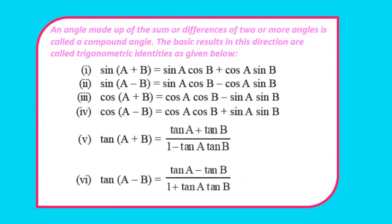An angle made up of the sum or difference of two or more angles is called a compound angle. The identities derived in this direction are called trigonometric identities, and we have a few trigonometric identities listed below.